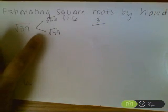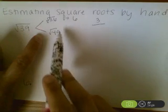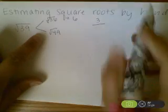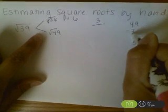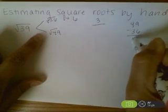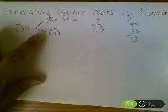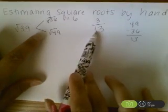Then you're going to find the difference of the two numbers. If you look here, 36 and 49, I'm going to subtract those two numbers. 49 minus 36 is 13. That becomes my denominator, so I have the fraction 3 over 13.